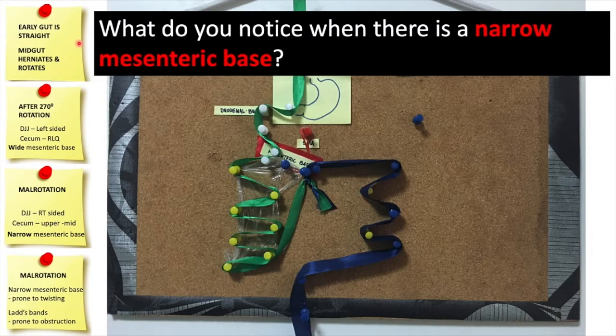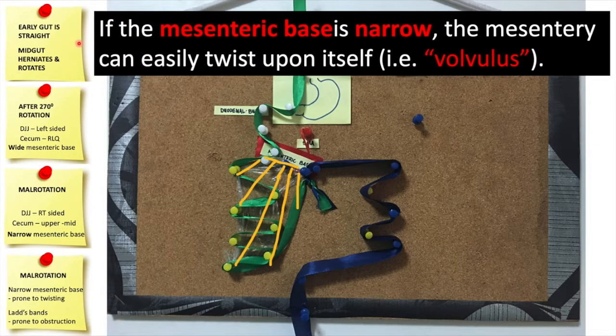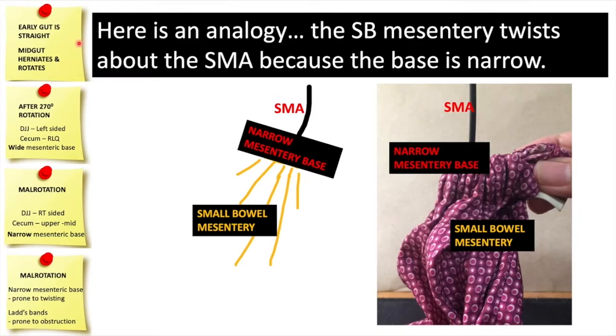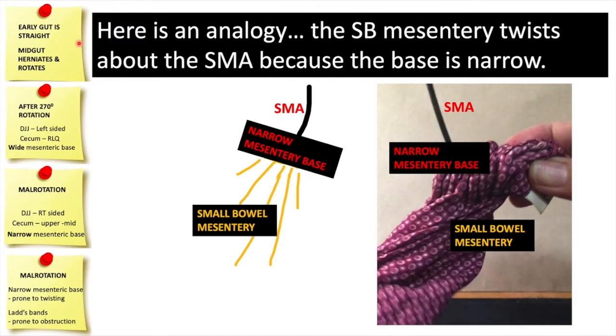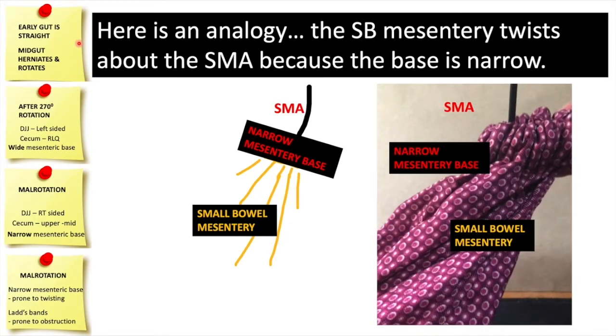Now, what do you notice when there is a narrow mesenteric base? If the mesenteric base is narrow, the mesentery can easily twist upon itself or undergo volvulus. Here is an analogy. The small bowel mesentery twisting about the SMA because the base is narrow. That's the twisting.